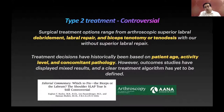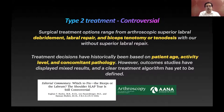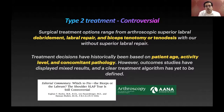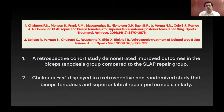For type 2 tears, options include debridement, superior labral repair, biceps tenotomy, or biceps tenodesis. The treatment decision is based on the patient's age, activity level, and concomitant pathology. Both SLAP repair and biceps tenodesis are acceptable index treatments for isolated type 2 tears. Although SLAP repair remains the most commonly performed procedure, tenodesis is an equally good alternative.